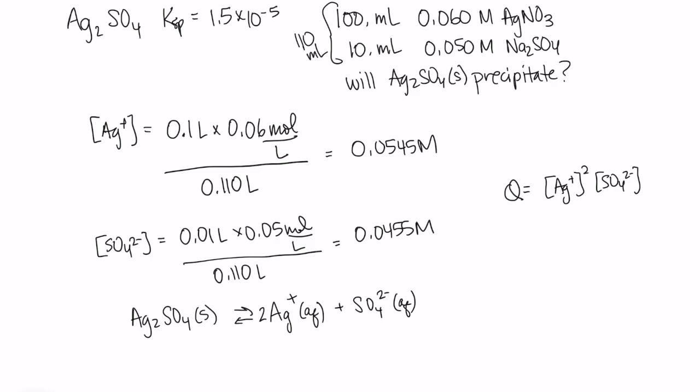So I've got those values. I'll plug them in. And I get Q equals 1.35 times 10 to the minus 5.